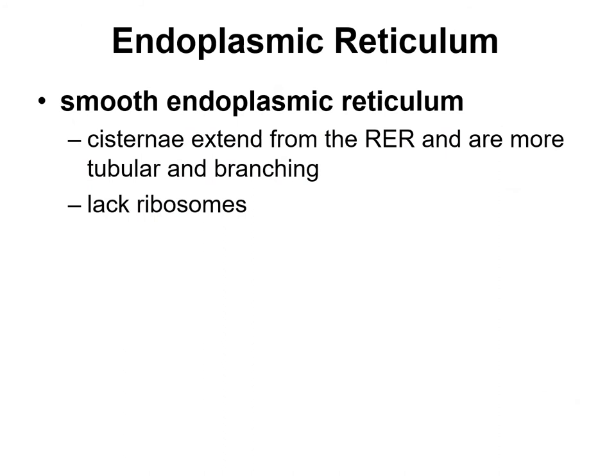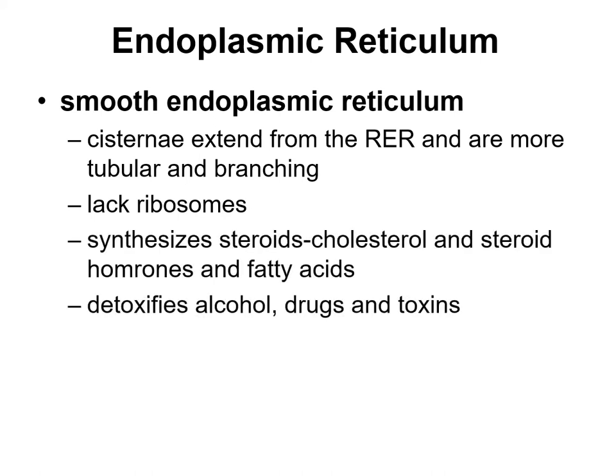The smooth endoplasmic reticulum is farther away from the nucleus compared to the rough ER. It typically extends from the rough ER and is more tubular in appearance with a more branching structure. The smooth endoplasmic reticulum lacks ribosomes — hence the name smooth endoplasmic reticulum.